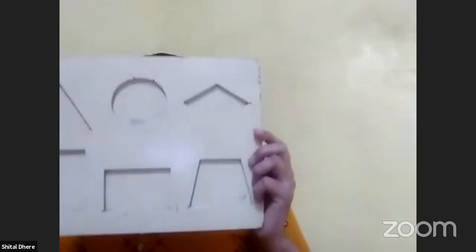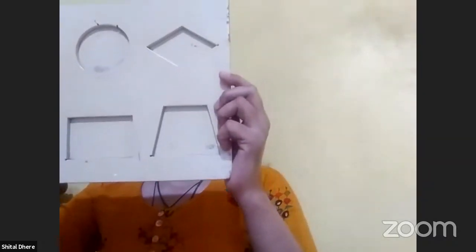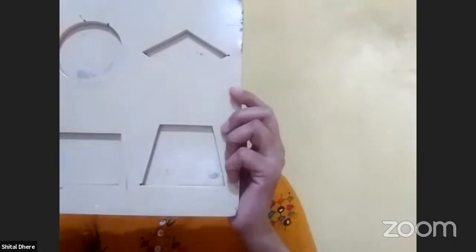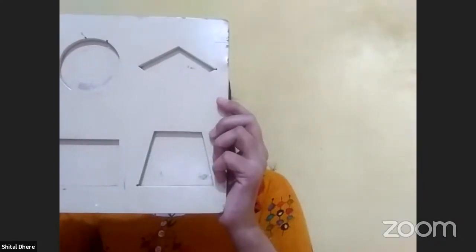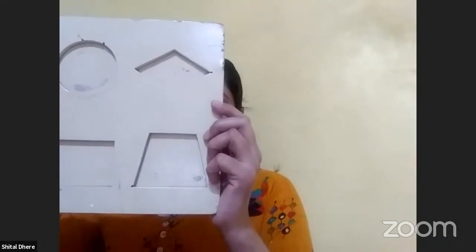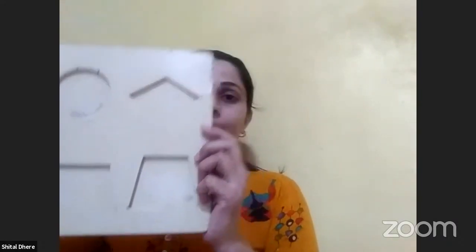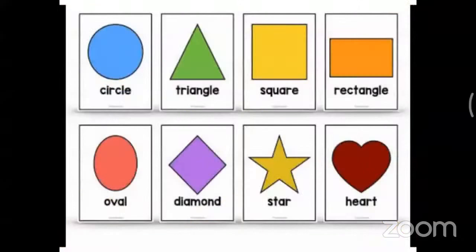Do you see this picture? Yes, teacher. What is this shape? There are shapes — we can see them all around us every day. We love to make our drawing around this shape. Today we are going to learn about a mobile shape. Subject is English. Topic name: mobile shape.